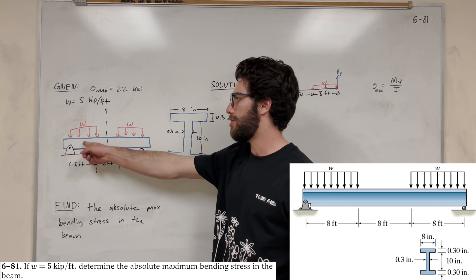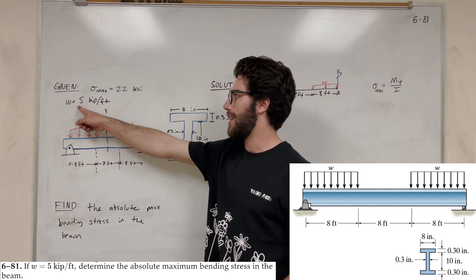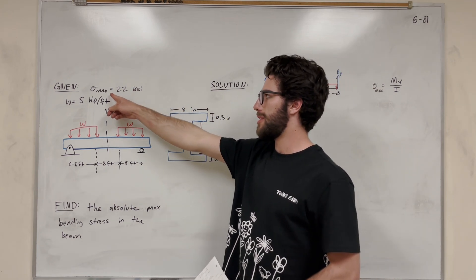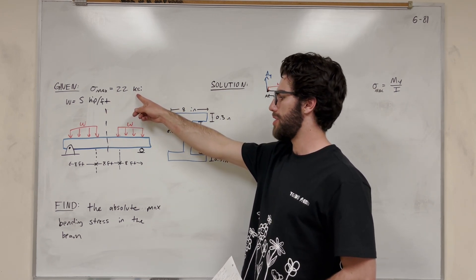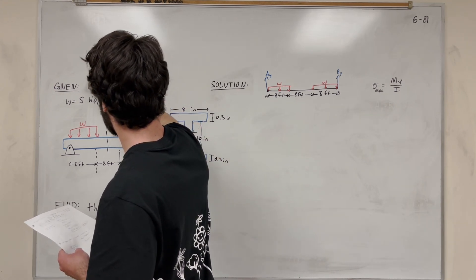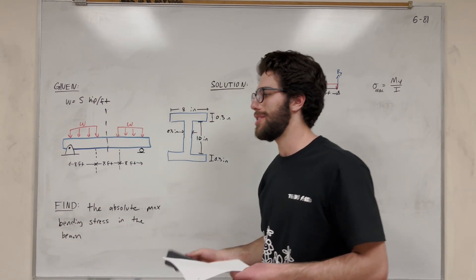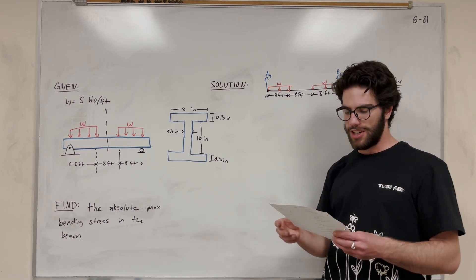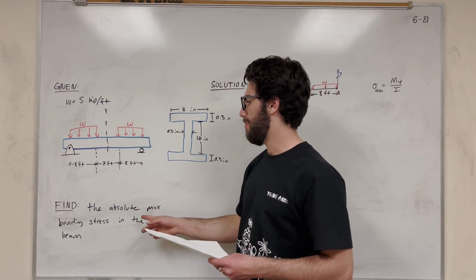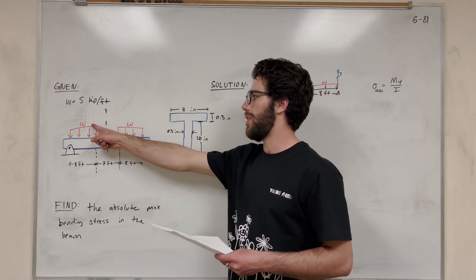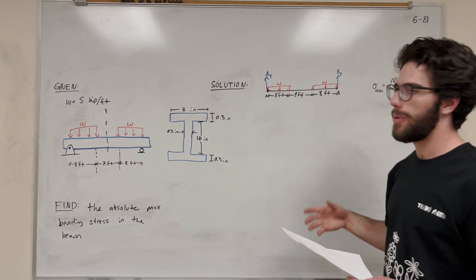So we're given this beam, right? It has these distributed loads, and their weight is 5 kip per feet. So we know that our max bending stress that our beam can support is 22 ksi. No, it's not. I always want to appreciate this problem. Spoilers. No, I'm just joking. That's not the answer, guys. Don't trust that, okay? That's not the answer.